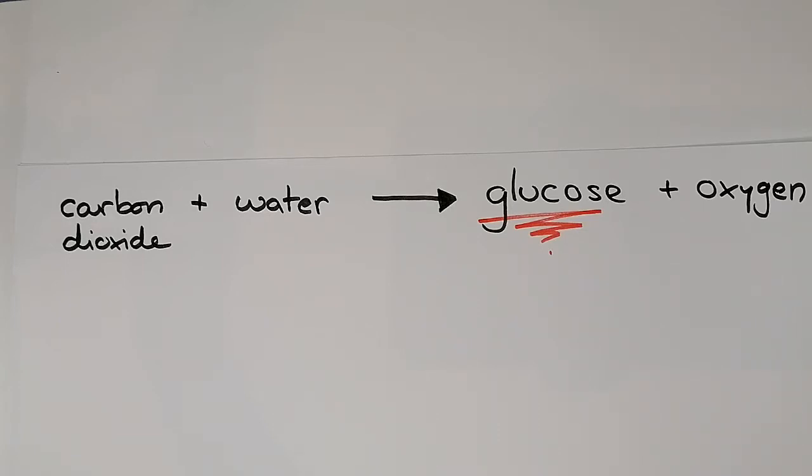The glucose is used to make all sorts of things around the plant. It's used to make cell walls, it's used with a little bit of tweaking to make proteins, it's used with a slightly different bit of tweaking to make DNA.